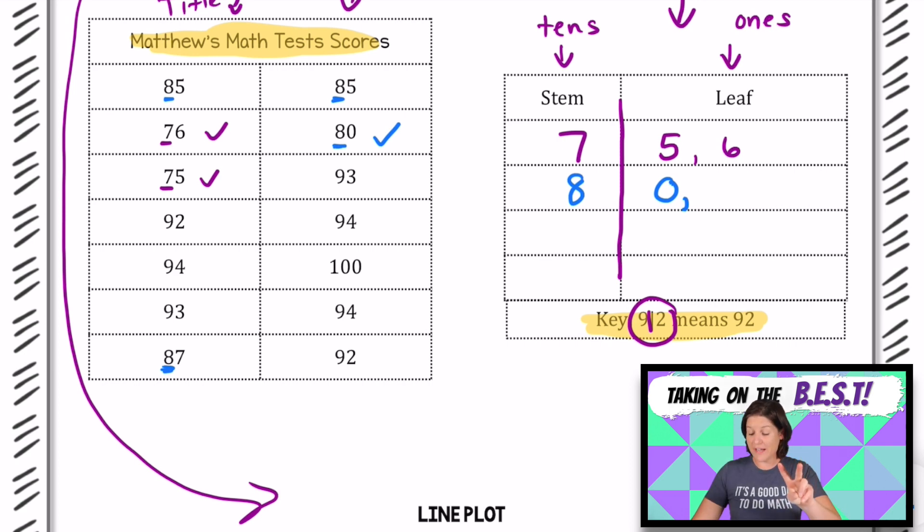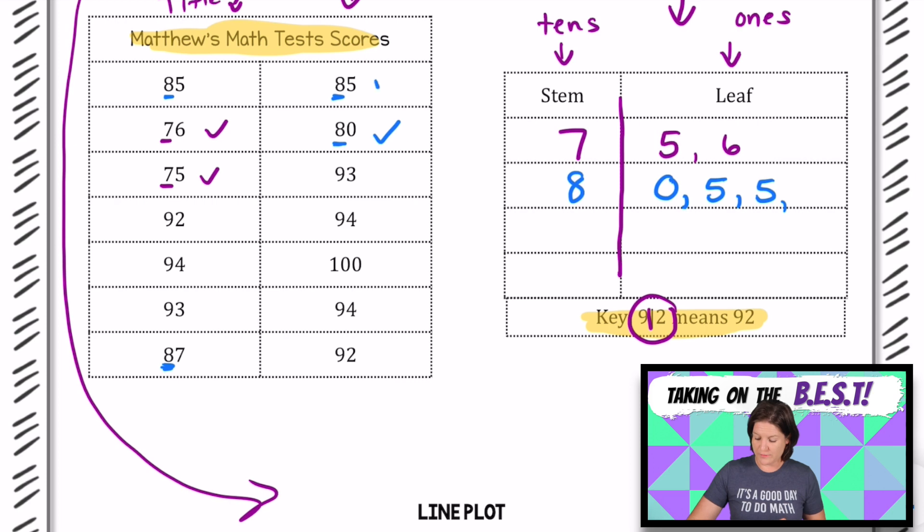Next we have two 85s. So we're going to write 5 and 5 for 85. And our last one is 87. Let's place 7 as our leaf. So just to review, we have 75, 76, 80, 85, 85, and 87 that we've taken care of so far.